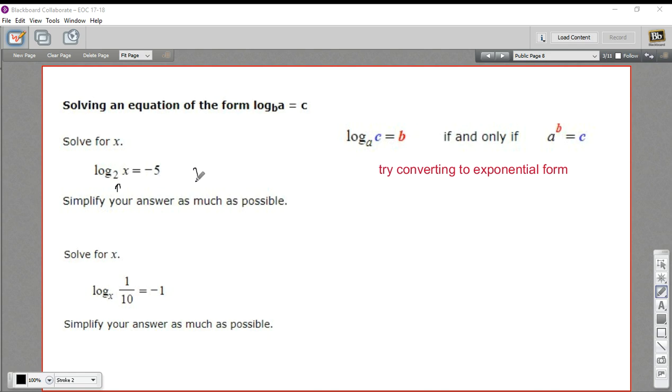So the answer for this one would be 2 to the negative fifth equals x. And what I've just done there is simply write this in exponential form. I took this as the base and what's on the other side of the equal sign is the power.